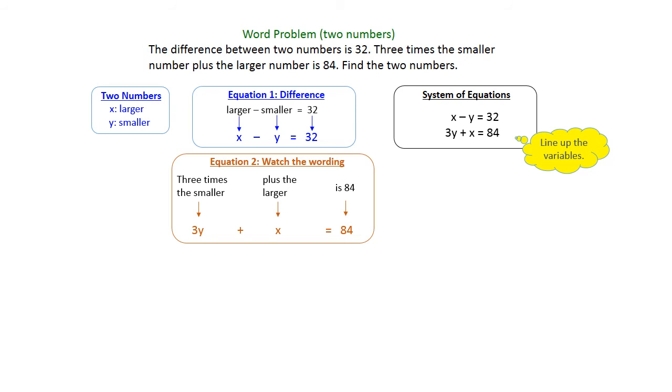So lining up the variables in that second equation, we're just going to swap the x in the front and put the 3y second. So now we have x plus 3y equals 84. Now write your equations right on top of one another, lining up all your letters and numbers.